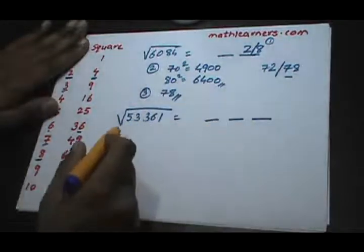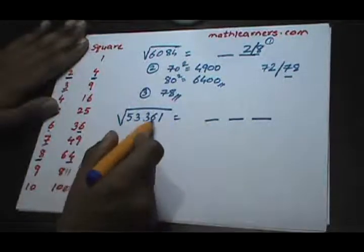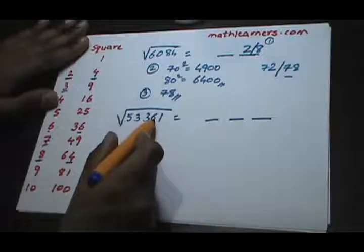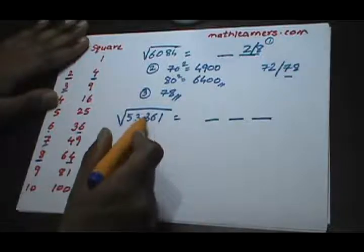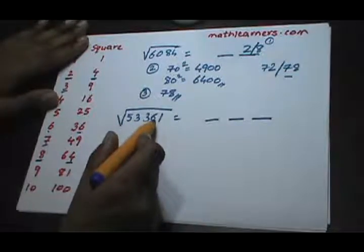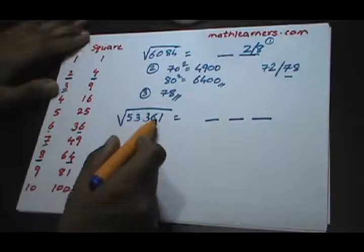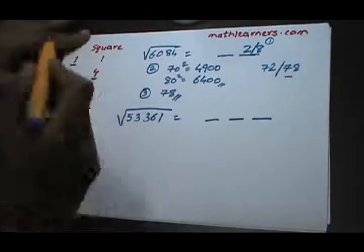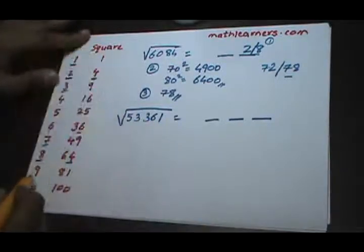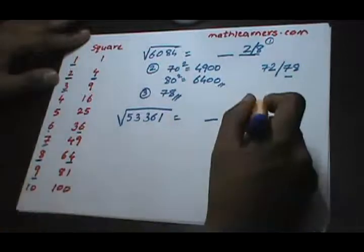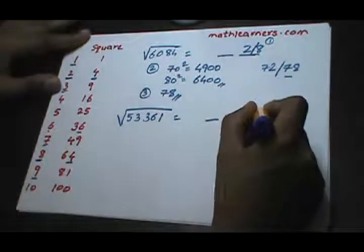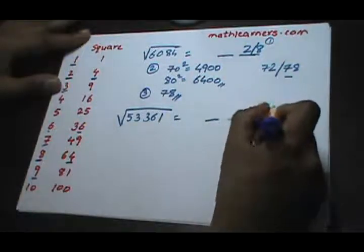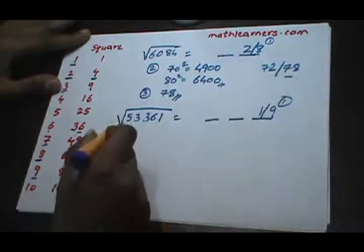First step: find the last digit of the square root. The perfect square is ending with 1, so the square root ends with either 1 or 9.